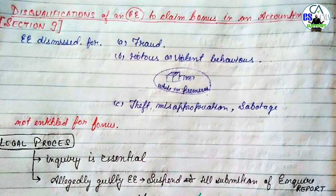इन कारणों से उसे disqualify कर दिया गया from getting bonus for that accounting year। आप यहां पर देख रहे होंगे जो picture बनाई है, उसमें मैंने chart बनाकर आपको simple तरीके से समझाने की कोशिश की है कि Section 9 आखिर कहता क्या है - और यह chart इसलिए कि आपको simply memorize हो जाए पूरा का पूरा section।